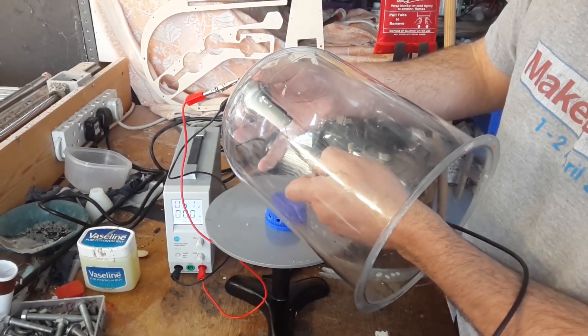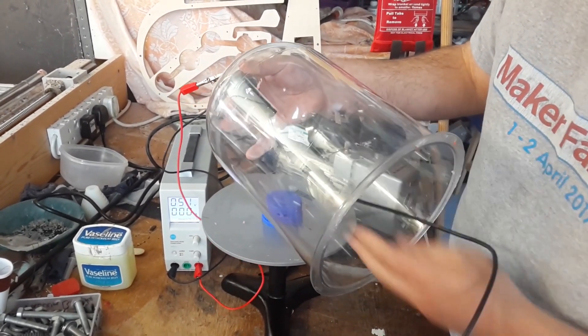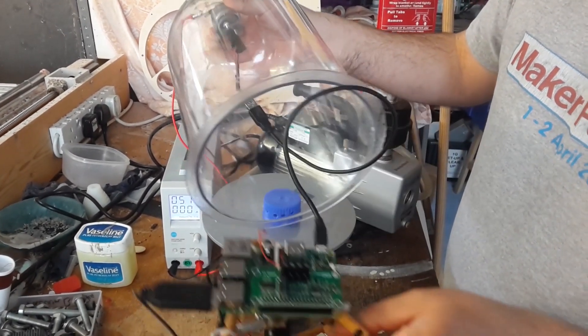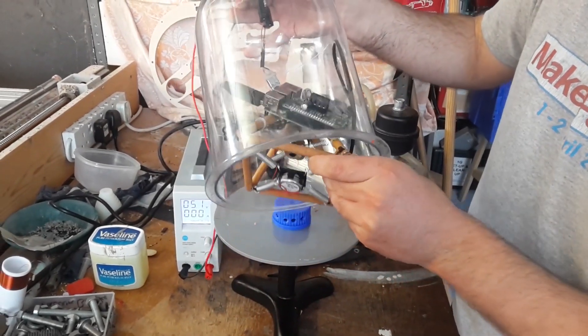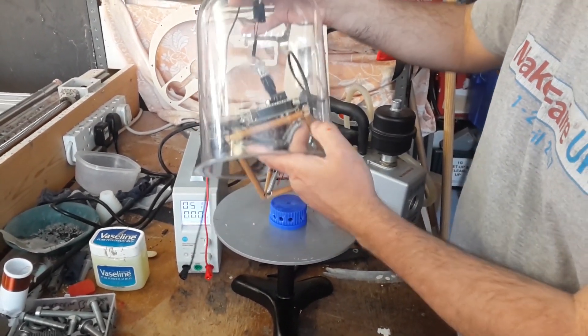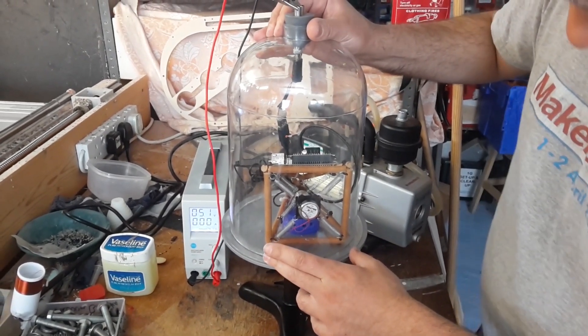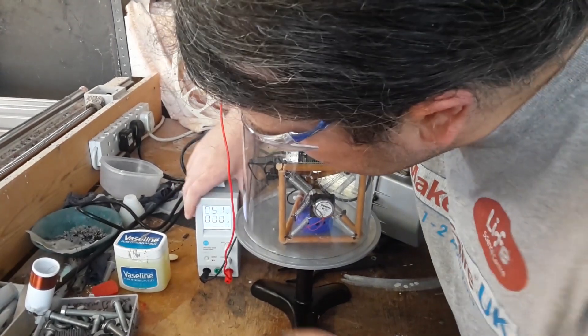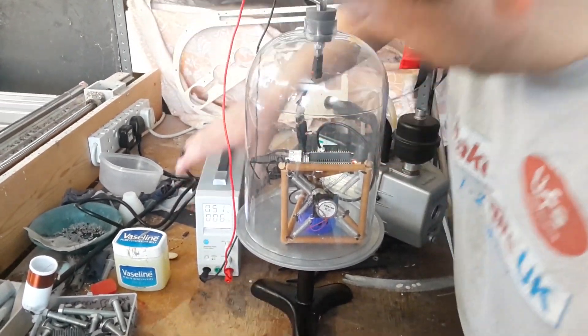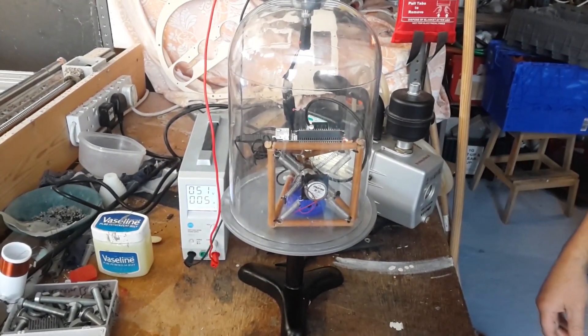When we connect the power, everything should power up. It just about fits in my vacuum chamber, which was convenient. Then we can turn the power on and the Raspberry Pi boots up.